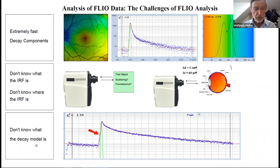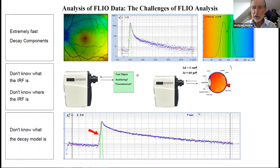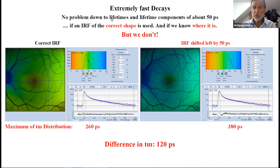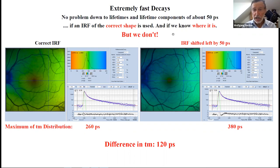The third challenge is we don't know exactly what the correct decay model is. Regarding the first challenge of extremely fast decays: with our detection and analysis technique, we have no problem determining lifetimes of about 50 picoseconds or even shorter—if an IRF of the correct shape is used and if we know where the IRF is. But we don't know this. Here's an example: analyzed with a correct IRF, the maximum of the lifetime distribution tau M is 260 picoseconds.